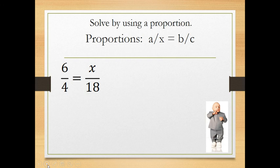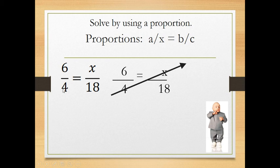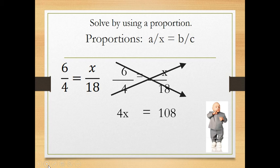Let's do an example — solve this proportion for x. The first step is to set the cross-products equal. So I'm rewriting the equation and multiplying across: 4 times x gives 4x. Then I multiply the other cross-products, 6 and 18, getting 108. Setting those equal: 4x = 108, then divide both sides by 4, and we get x = 27.